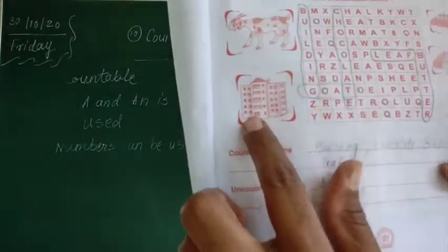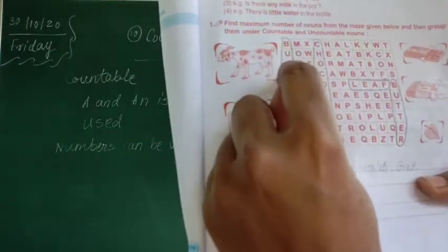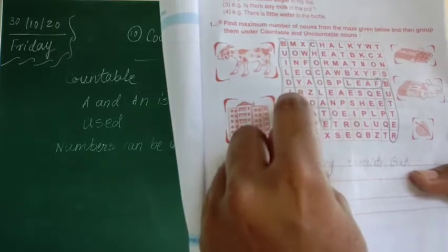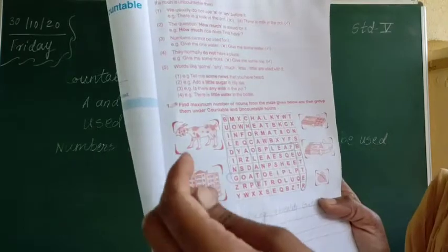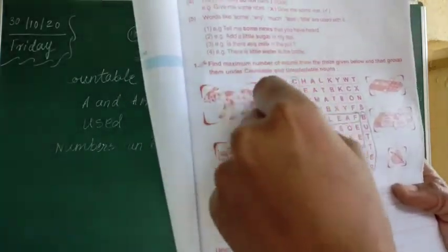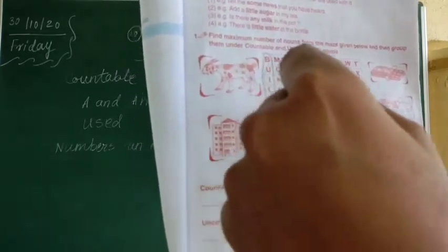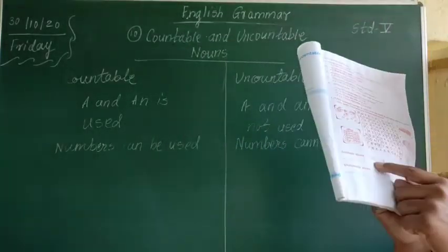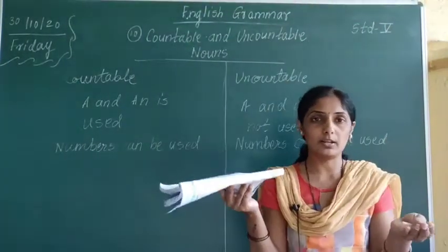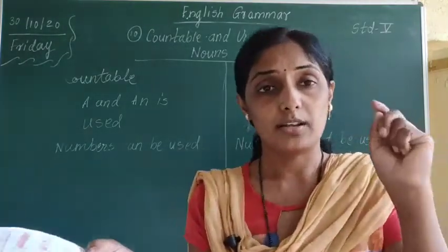The second one is building. Can you see building? B-U-I-L-D-I-N-G — you can see the word building in the grid. Circle that word, and building is a countable noun — you can count buildings — so write it down under countable nouns.